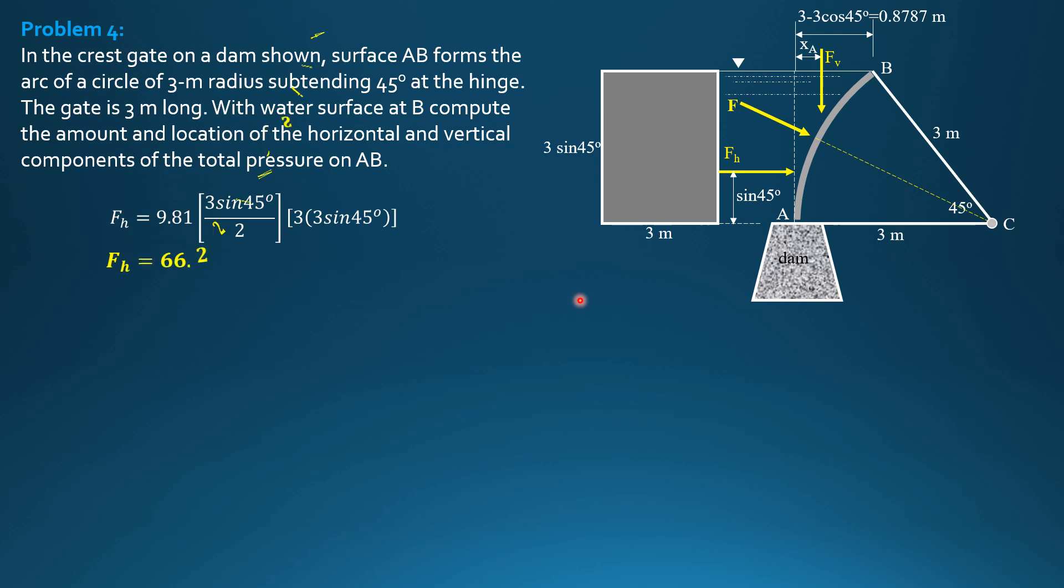So F_H is equal to 66.22 kN. And it is sine 45 or 0.707 meter above A. So we have answered F_H.